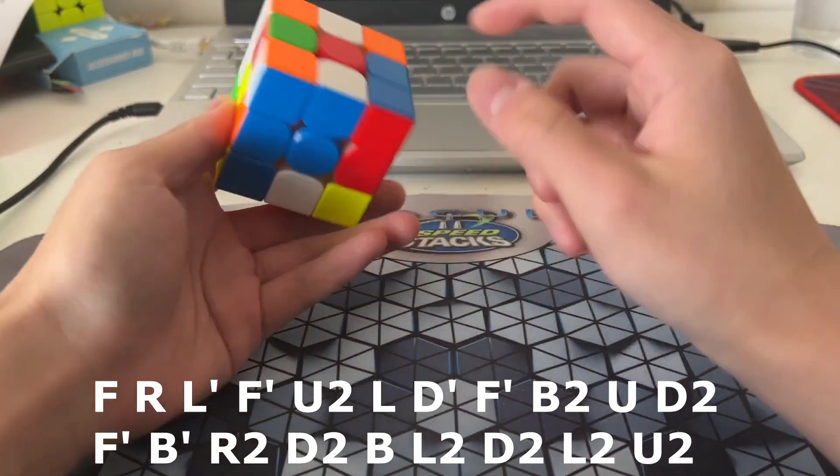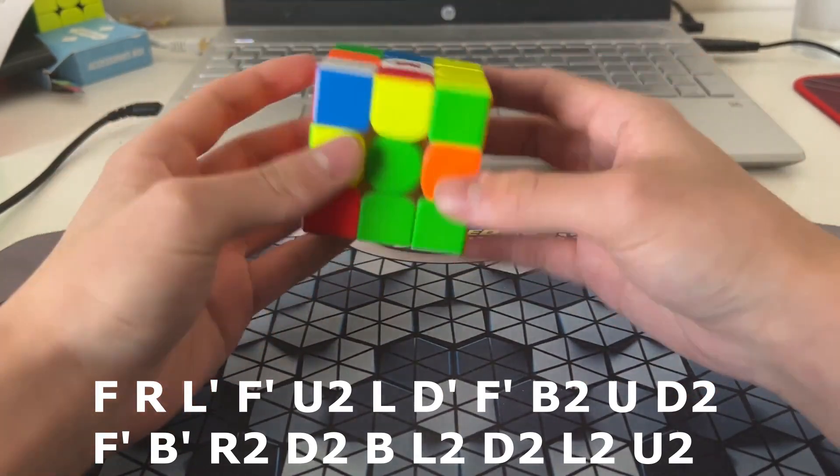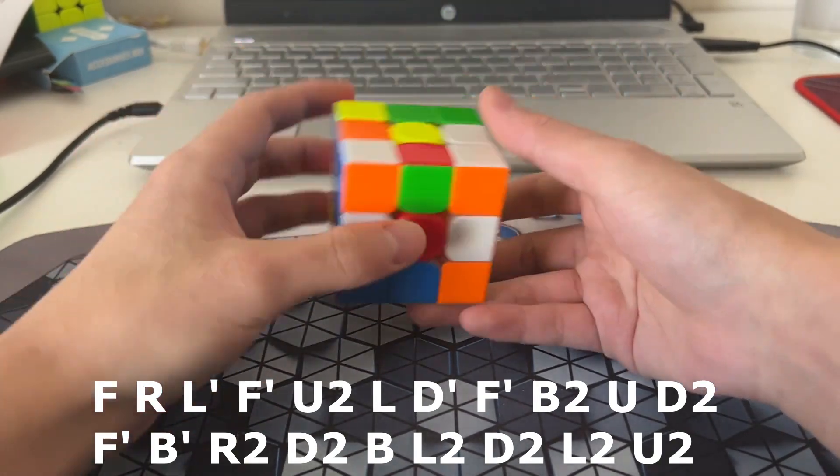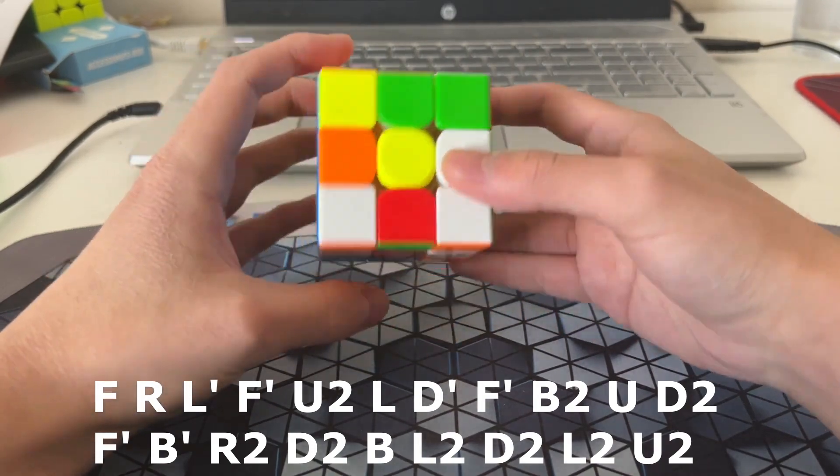So I noticed there's some blocks in this scramble, which might make an x-cross possible. And there's an x-cross, but I don't know how good it's going to be, or efficient, and I'd rather just do white because there's some really nice first pairs.